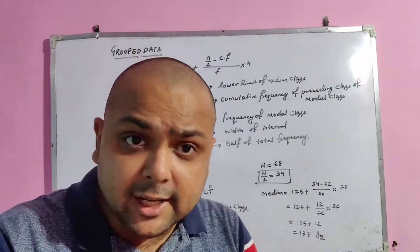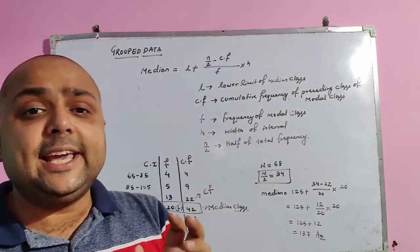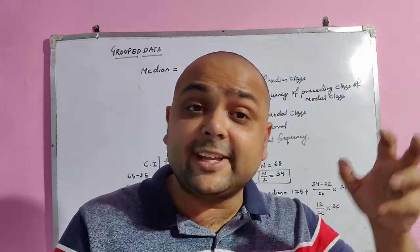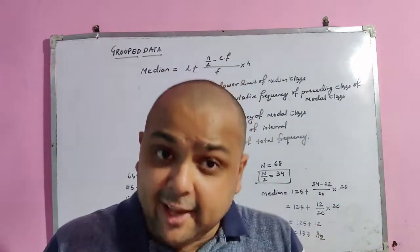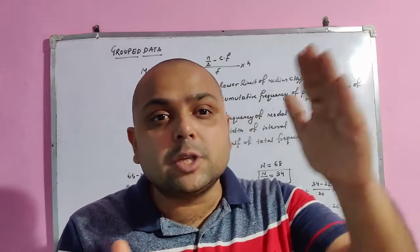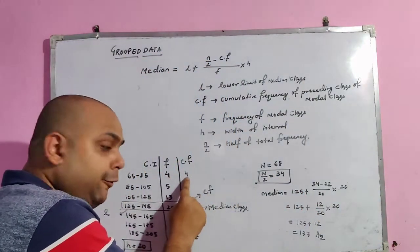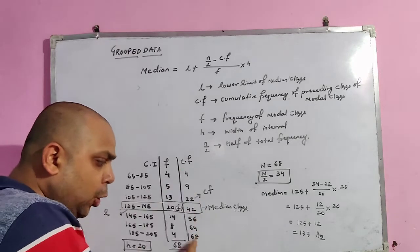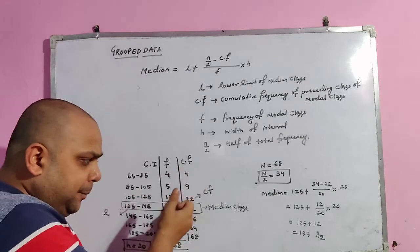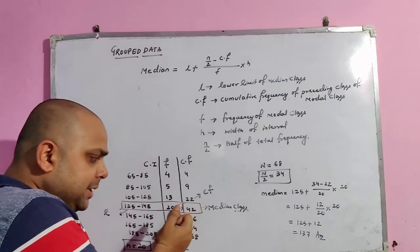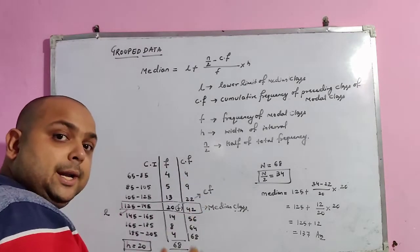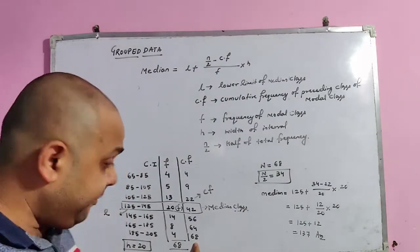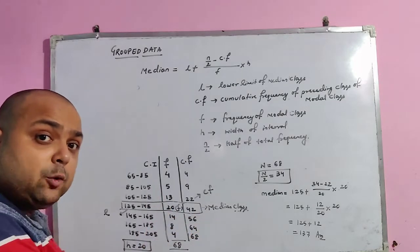In the case of median we calculate cumulative frequency (cf), unlike mean where we calculate the class mark. Cumulative frequency means summing up frequencies progressively: the first value stays as 4; 4+5=9; 9+13=22; 22+20=42; 42+14=56, and so on. The total at the end is Σf. Both the final cf and Σf must be equal — if not, something is wrong.